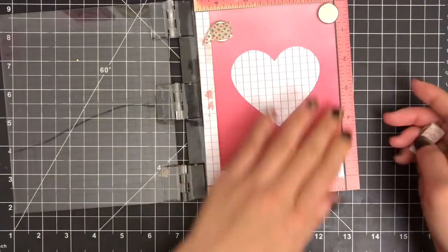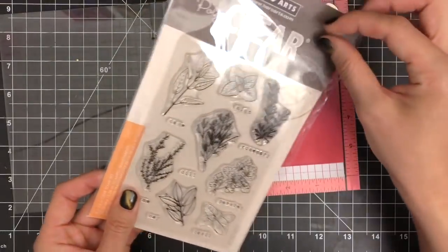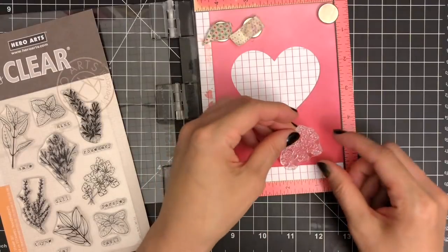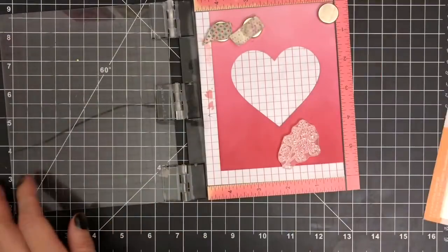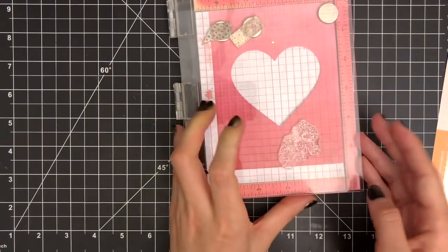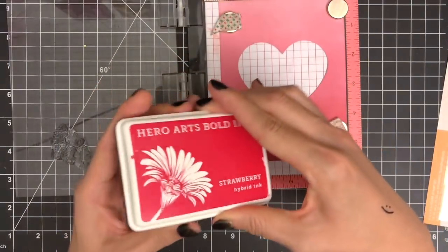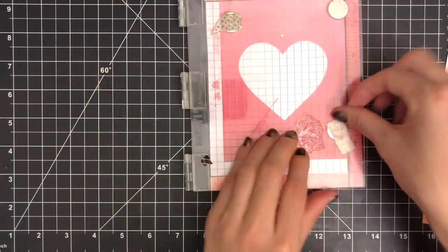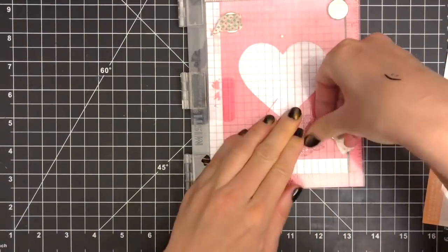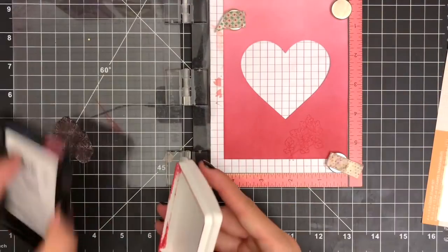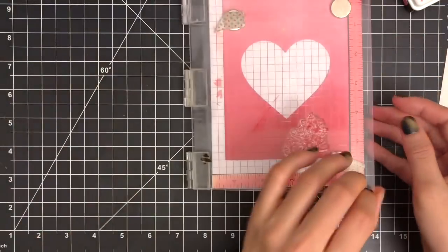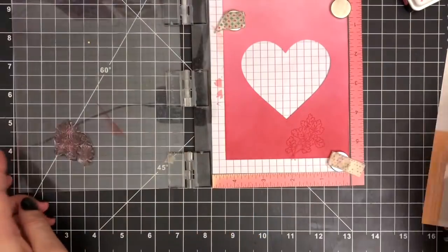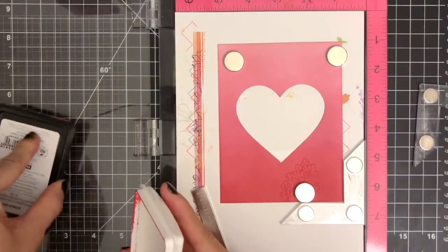It's now time to create my ombre background. I'm placing my inked panel inside my Misti stamping tool and I'm using magnets to hold the paper in place. I'm pulling out my stamps from Fresh Herb Stamp Set. I'm going to ink up the stamp with Hero Arts Strawberry Bold Ink. Then I'm closing the Misti cover to stamp it onto my paper. Since I didn't get a good impression, I'm going to stamp one more time to get an intense color. I'm stamping the images along the bottom of my panel first with the darkest color and continue stamping toward the top of the panel with the lightest color.